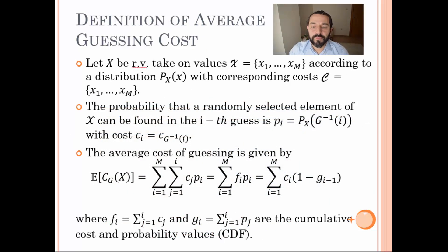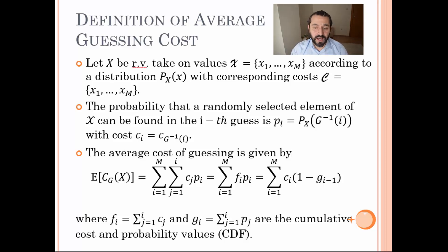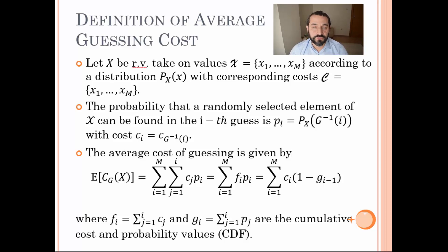In general, we have M number of elements subject to a probability distribution and fixed costs, where the i-th item happens with probability p_i and is associated with cost c_i. We'd like to suppose that we have a guessing function G, and then the average cost of guessing can be expressed as shown in this slide, where the F_i's are for cumulative sum of costs and G_i's are for cumulative sum of probabilities. A similar expression can be given for the moments of cost of guessing, which we'll skip for brevity.